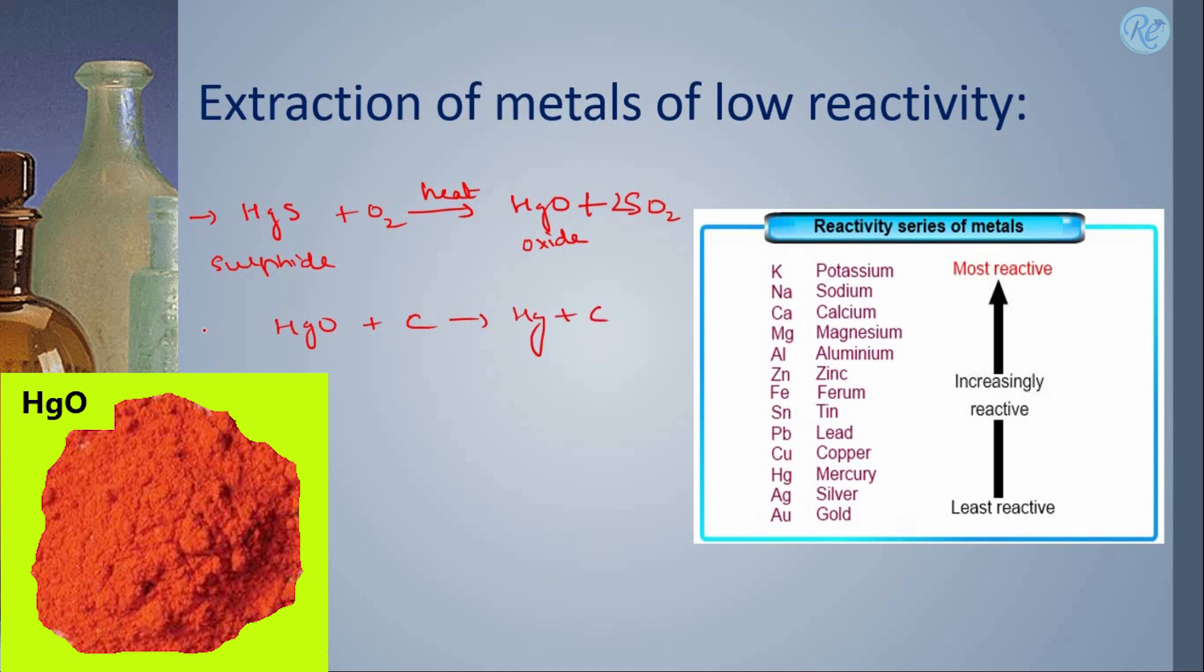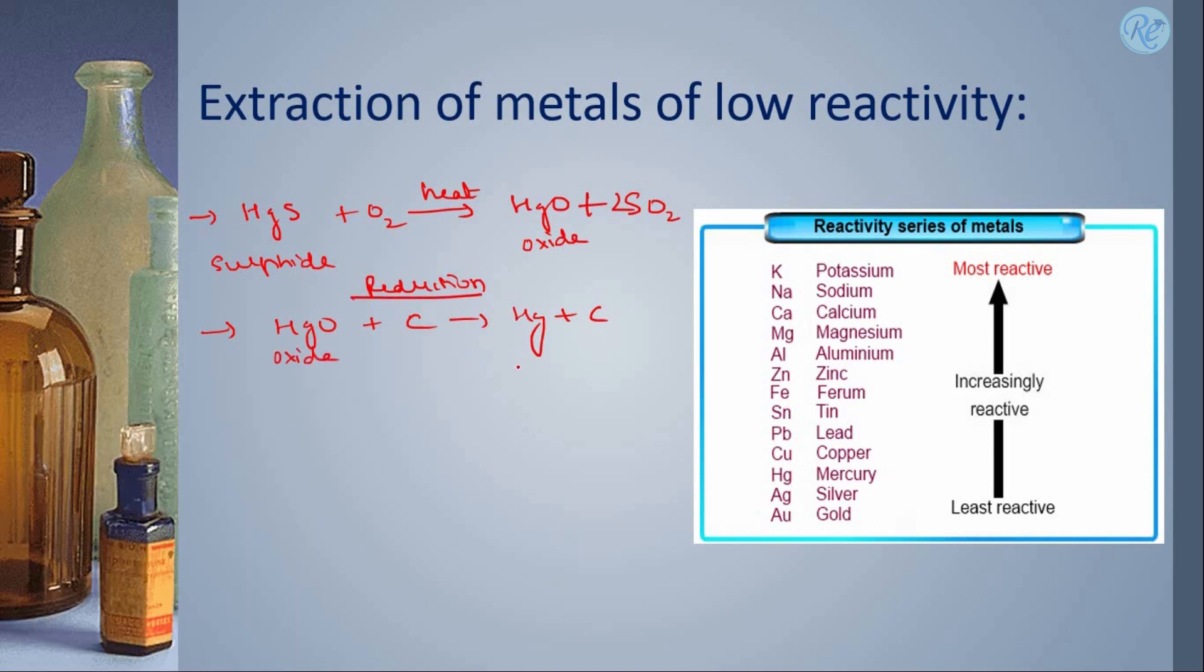In the next step, the reduction takes place and the oxide can be reduced to metal by using any reducing agent. Here I have used coke in this case. You can use any reducing agent and convert the oxide into metal. This is the process that is followed for metals of low reactivity.